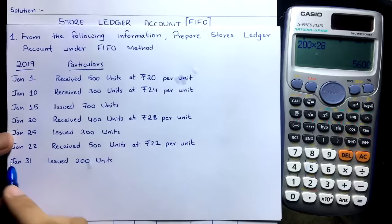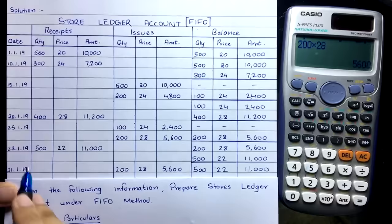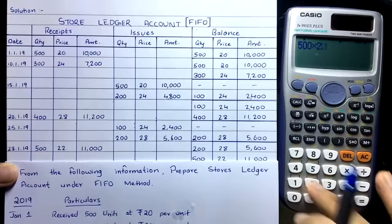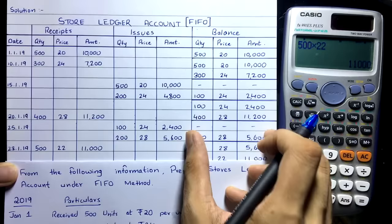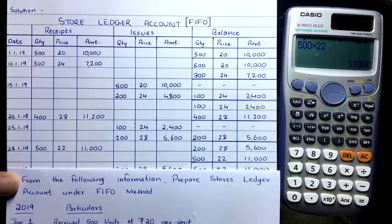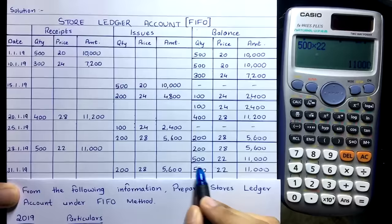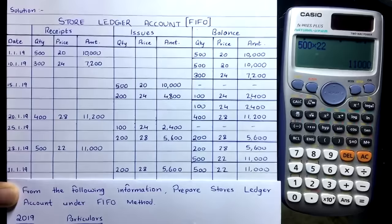On 28th January, we received 500 units at ₹22 per unit: 500 × 22 = ₹11,000. Applying the same rule: draw a line in the Balance column, copy the previous balance down — 200, ₹28, ₹5,600 — and then write the new receipt below: 500, ₹22, ₹11,000. Now two lots are in the warehouse.